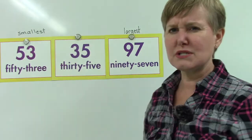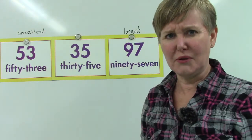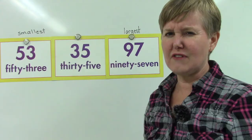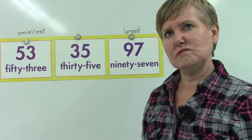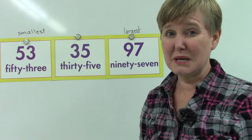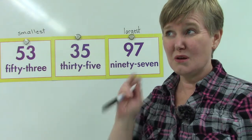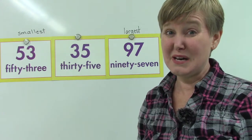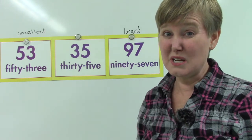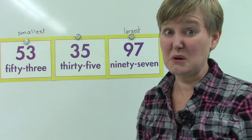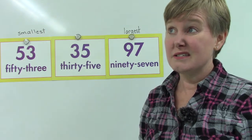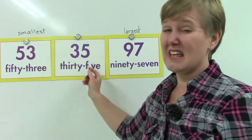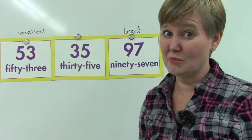Now we have these two numbers and they look very similar — we have a 53 and a 35. Sometimes when we're writing numbers we switch the numbers around and mix them up a little bit. But we need to have the right number in the right place, so it does make a difference that these two are switched.